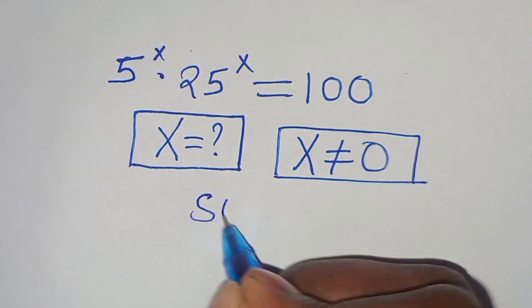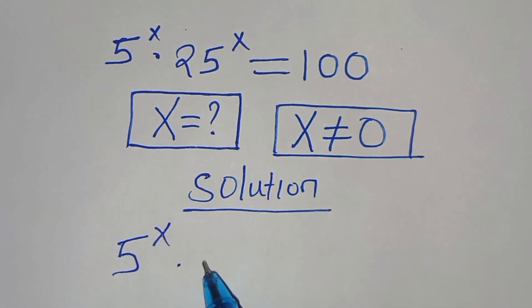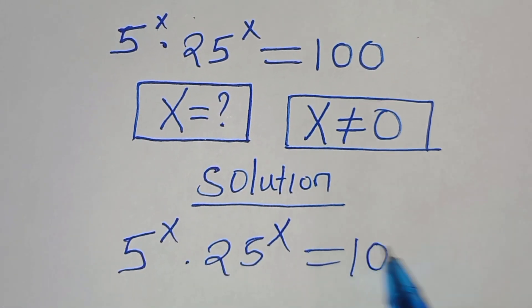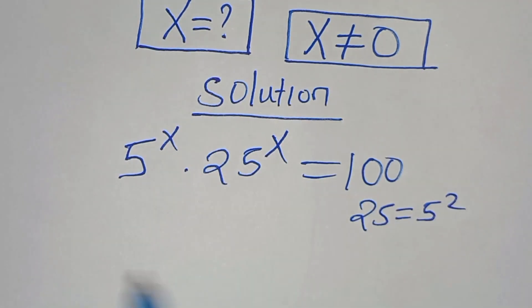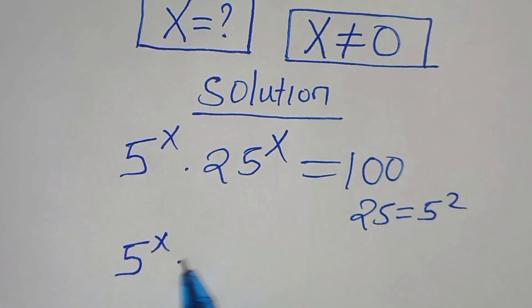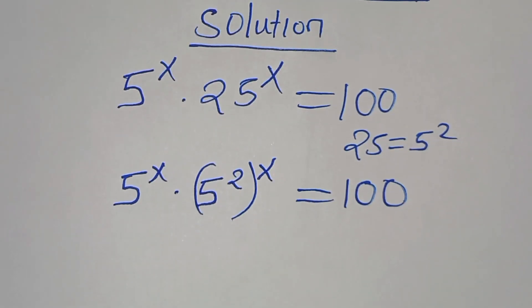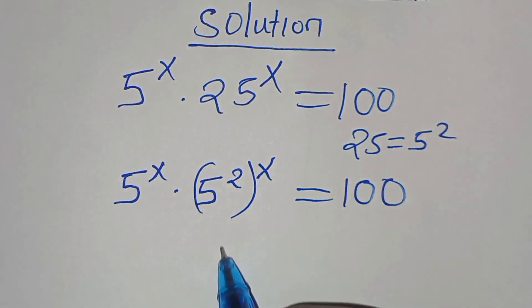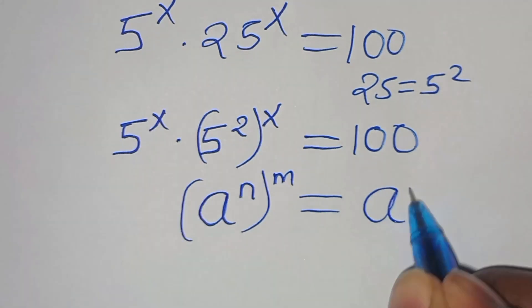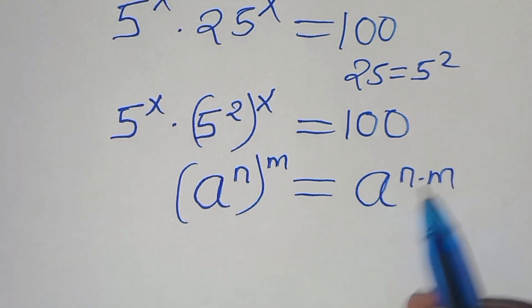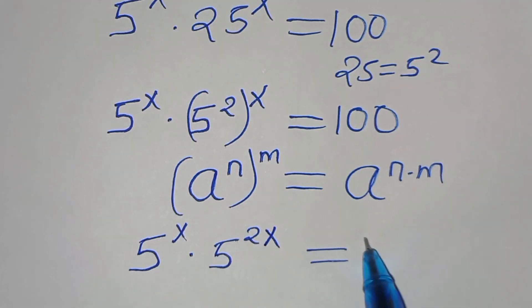Let's present a solution from here. We have 5 to the power of x times 25 to the power of x, this is equal to 100. Now we can express 25 as 5 to the power of 2. So we have 5 to the power of x times 5 to the power of 2, raised to power x, this is equal to 100. Applying the exponent property that (a^n)^m = a^(n×m), we get 5 to the power of x times 5 to the power of 2x, this is equal to 100.